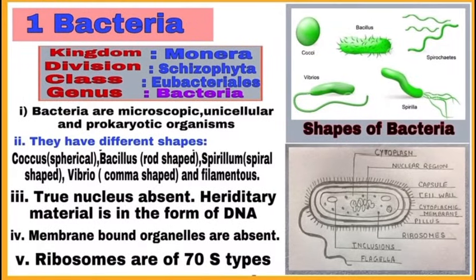Start with number 1, bacteria. Write its classification and then write important characteristics of bacteria. First, bacteria are microscopic, unicellular — meaning they are made up of only a single cell — and they are prokaryotic organisms. Second point: they have different shapes; may be spherical, rod-shaped, spiral, comma-shaped or filamentous.